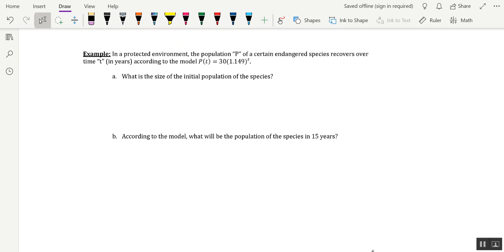This particular exponential function, capital P of T, represents the population P of a certain endangered species that is recovering over time T, which T is in years. The function that's being spotlighted for this is capital P of T equals 30 times 1.149 raised to the power of T.